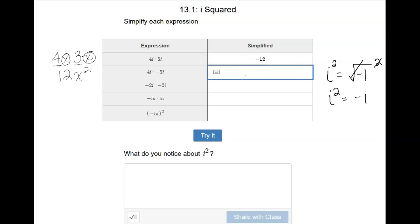Let's try the same thing with the next one. We have 4i times negative 3i. So again, 4 times 3 is negative 12, and i times i is i squared. Remember we said i squared is the same thing as negative 1. So if I have negative 12 times i squared, I'm really taking negative 12 times negative 1. And everybody knows that a negative times a negative is a positive, so this would actually be positive 12.